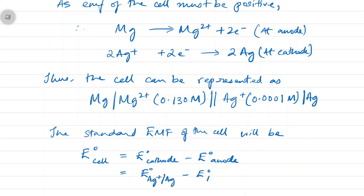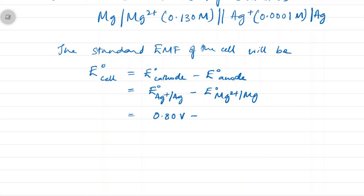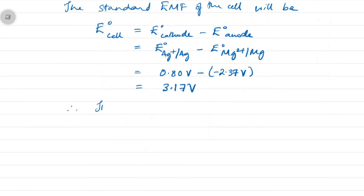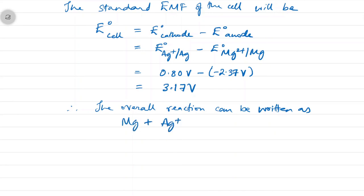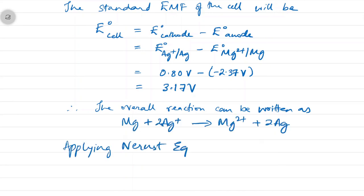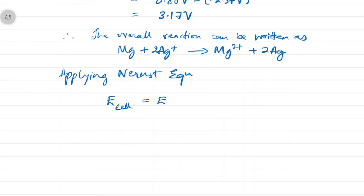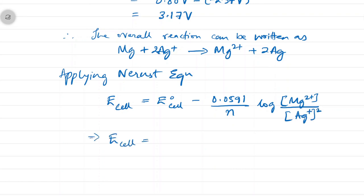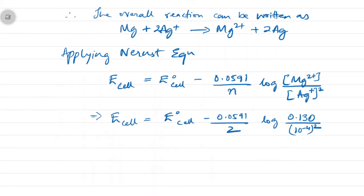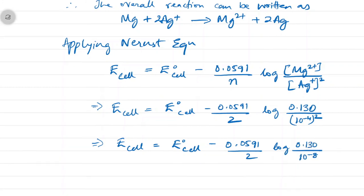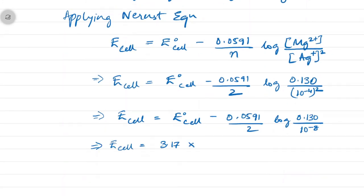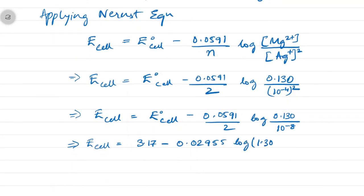Applying the Nernst equation, the cell potential is: E(cell) = E°(cell) − (0.0591/n) log([Mg²⁺]/[Ag⁺]²). When we simplify using the given concentrations, the value of the cell potential is found to be 2.96 V.